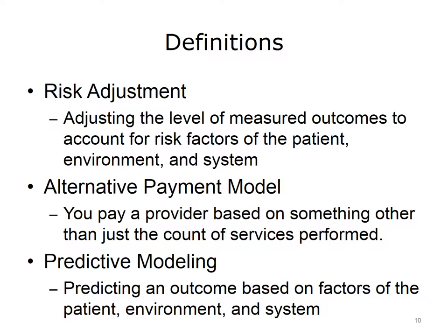Historically, this calculation was performed by actuaries concerned with understanding the expected cost of a person or group of persons based on measurable factors. Currently, as health systems become responsible for the costs of patients they see, risk adjustment is being used to facilitate alternative payment models and risk stratification. Alternative payment models refer to when you pay a provider based on something other than just the count of services performed. The term predictive modeling refers to predicting an outcome or the likelihood of an outcome based on factors of the patient, the environment, and the healthcare system. One example is to identify which patients undergoing obesity surgery are most likely to have complications.